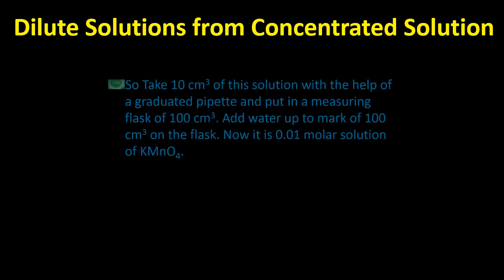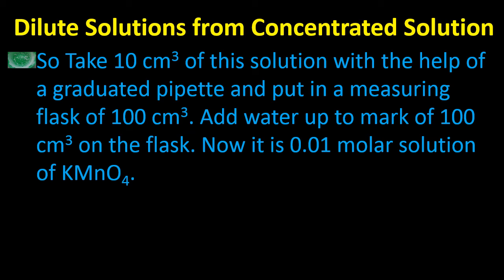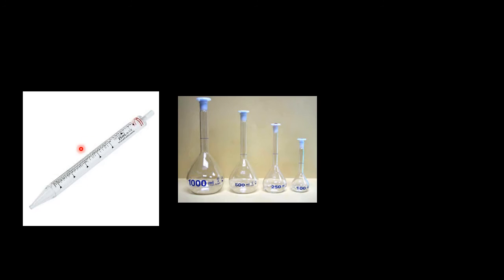To prepare the dilute solution: take 10 cm³ of the concentrated solution using a graduated pipette. A pipette is an apparatus used to transfer precise liquid volumes — it is like a simple graduated pipe, tipped on one end and open from both ends.